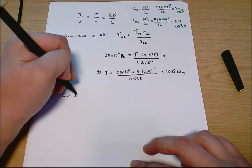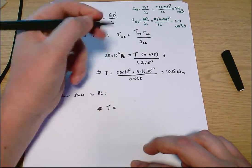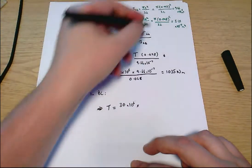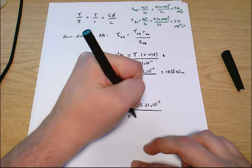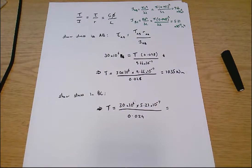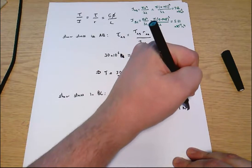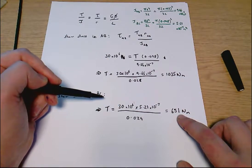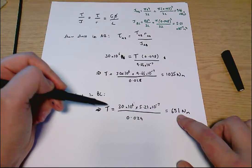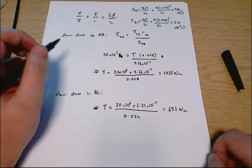Same thing for the shear stress in BC. We can just jump straight to this last step. It's going to be 30 times 10 to the 6 times 5.21 times 10 to the minus 7, all divided by 0.024. That comes out to be 651 newton metres. So that's a more restrictive condition. If we go above 651, we'll have too much shear stress in BC, which kind of makes sense. If you've got the same torsion everywhere, it's going to cause the highest shear stress in the narrowest bit because that has the lowest value of J.